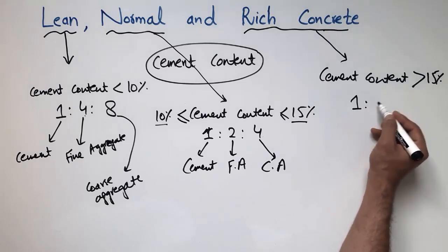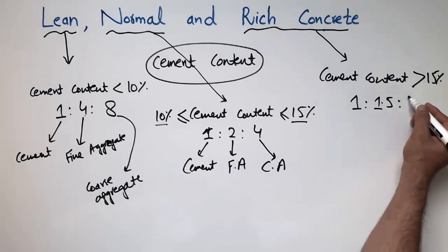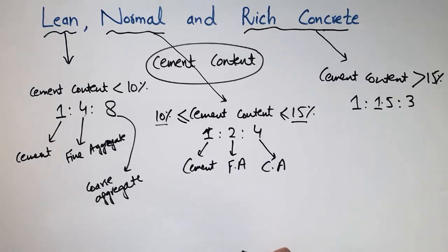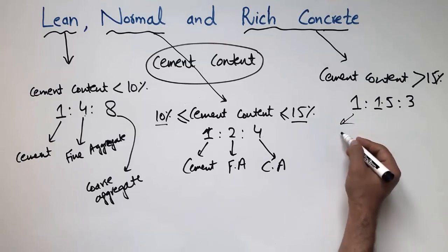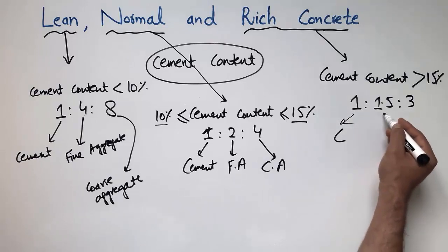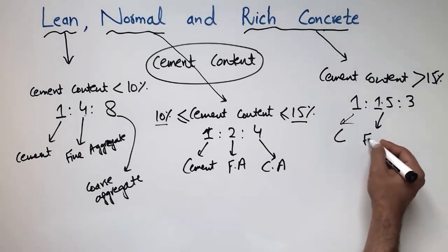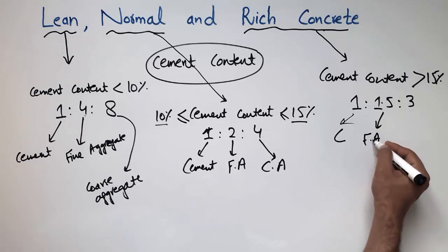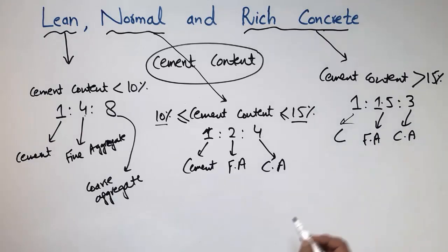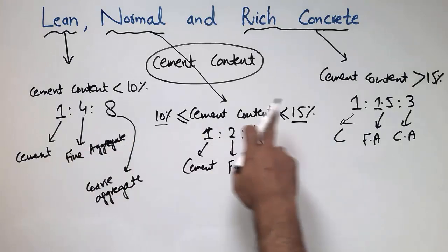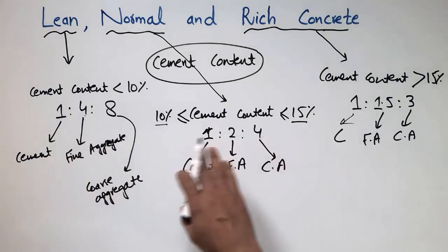The general ratio for rich concrete is 1:1.5:3, where 1 is the cement, 1.5 is the fine aggregate, and 3 is the coarse aggregate.